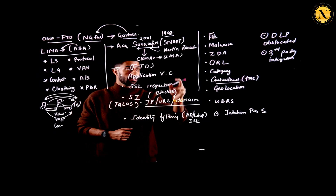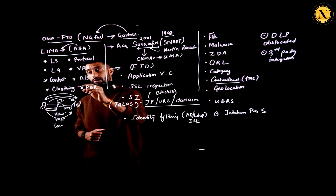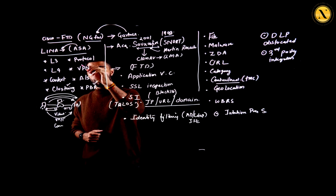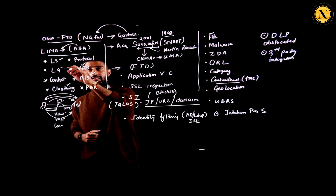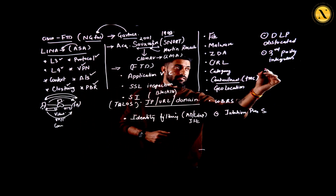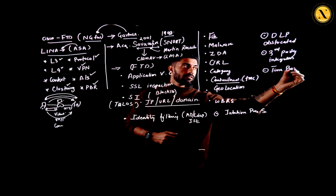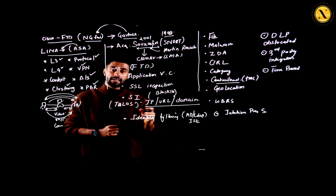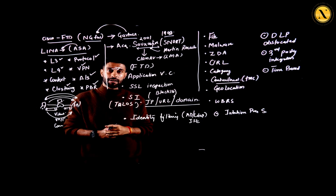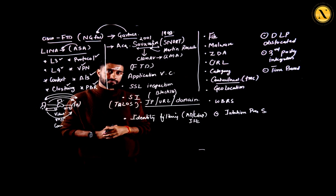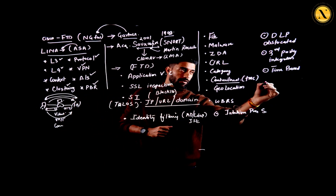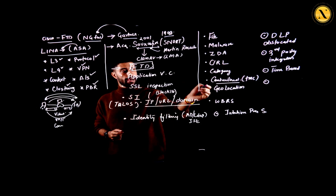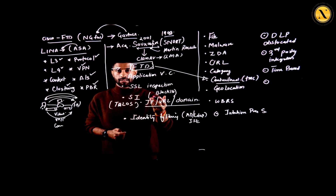So summarizing Cisco FTD: all these features are available — clustering, active/standby, policy-based routing, VPN, Layer 3 and Layer 4 filtering, protocol filtering, and time-based filtering. For example, you can set Monday to Friday, 9:00 to 17:00 office hours for internet access and block after that using recurring time-based policies. All these features are accumulated together in one product, FTD, managed from a centralized device called the manager, which gives it an upper edge.